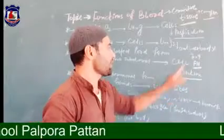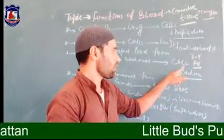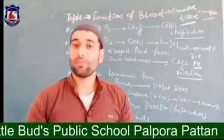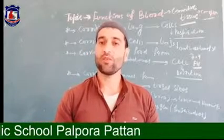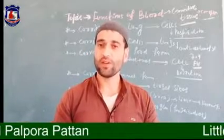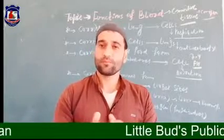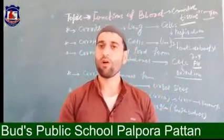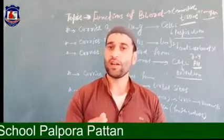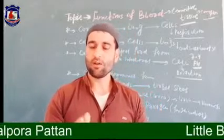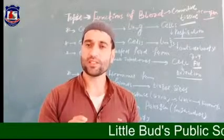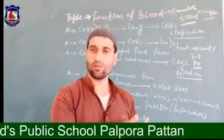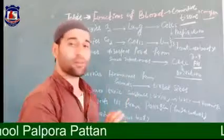The pH of blood is 7.4, so it is slightly alkaline in nature. And why doesn't blood coagulate in our body? When it contacts with the environment, it shows coagulation. It's because blood contains an anti-coagulant substance called heparin, which is formed in the liver. So blood is not coagulated inside our body because of this anti-coagulant substance, heparin.